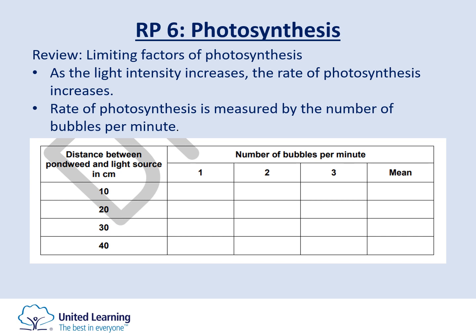Results are collected starting at 10 cm distance, increasing to 20, 30, and 40 cm, spending one minute counting bubbles at each increment. Ideally, repeat this three times to calculate a mean. On a graph, light intensity goes on the x-axis and rate of bubble or oxygen production on the y-axis. As light intensity increases, so does the rate of photosynthesis, measured as the number of bubbles produced per minute.